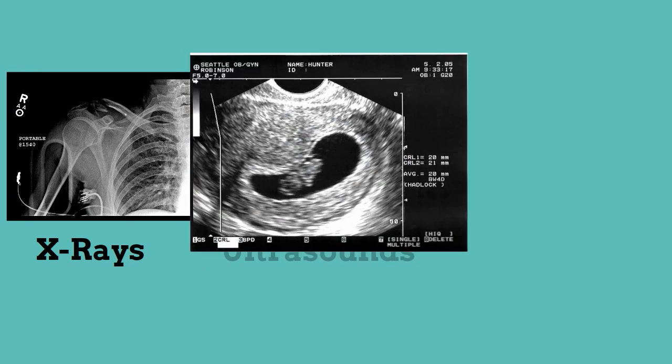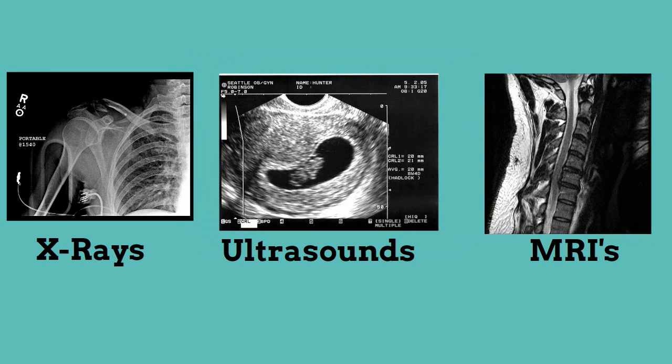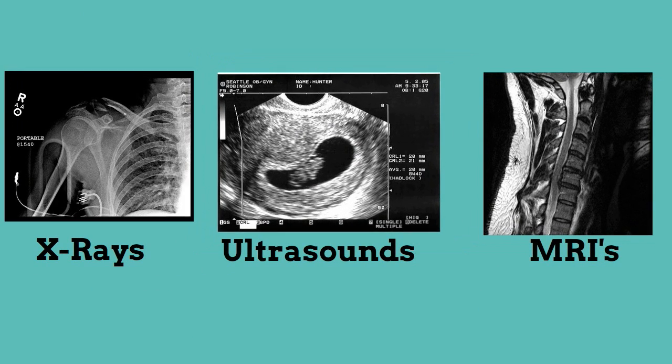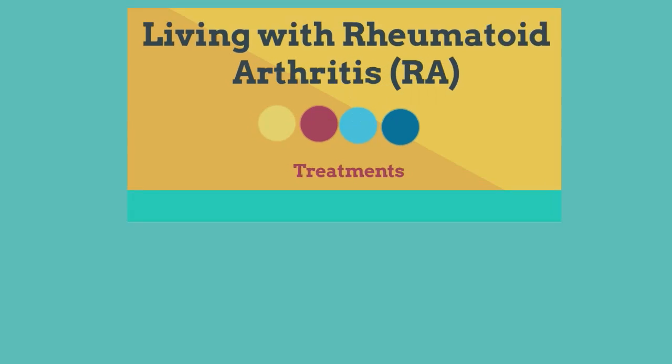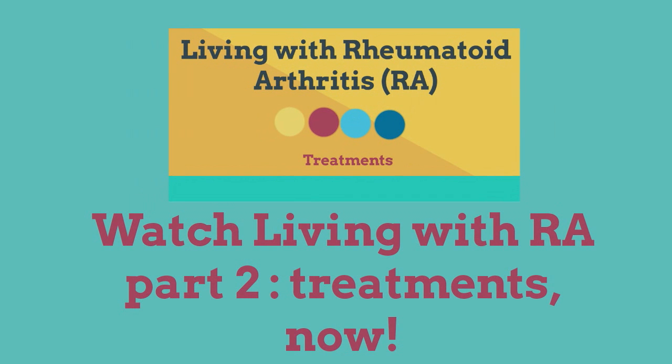Number five: X-rays, ultrasounds, and MRIs are also used to look for joint damage. To learn more about medication used to treat RA, please watch part two of this series, Living with Rheumatoid Arthritis. Thank you for watching.